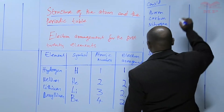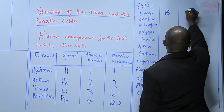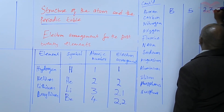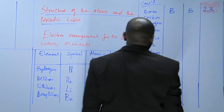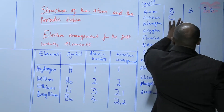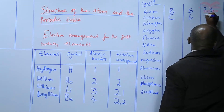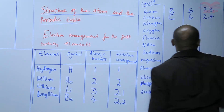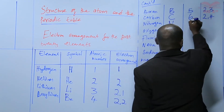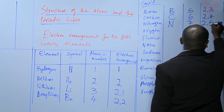We go to boron. The symbol is B, the atomic number is 5. The electron arrangement is 2 in the first energy level, then 3 in the second. Total 5. Carbon - C as the symbol, the atomic number is 6. We have 6 electrons, so 2 in the first energy level, then 4. Nitrogen - N, capital. The atomic number is 7. Then 2 electrons in the first energy level, then 5 in the second.